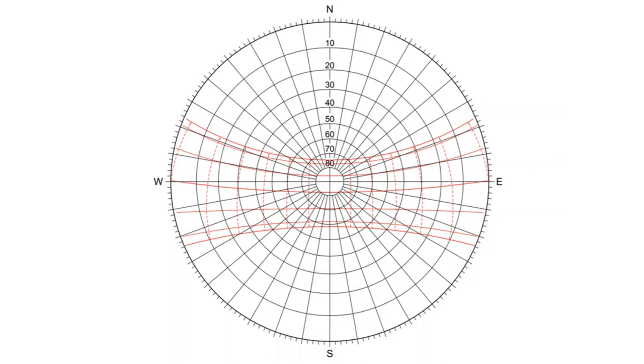The concentric circles correspond to the altitude angles, from the outward circle at 0 degree to the innermost point at 90 degree.